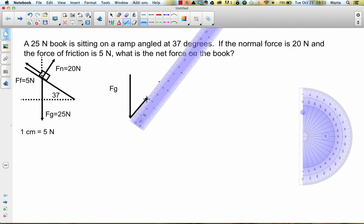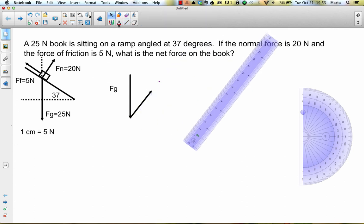And then I'm going to go ahead and draw in my arrow for the normal force. Since this one's 20 newtons, I have to make it four centimeters long. So I'll move my ruler out of the way and add a label for that force.